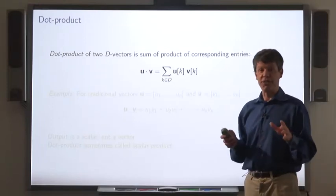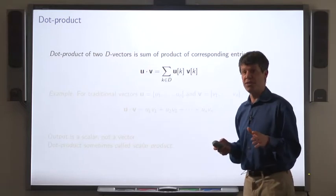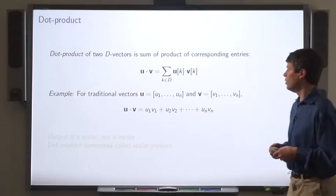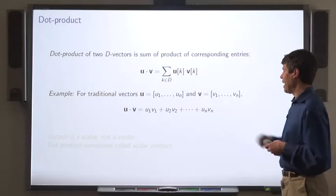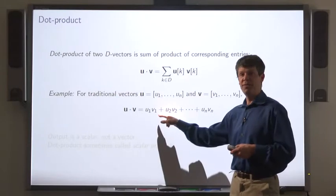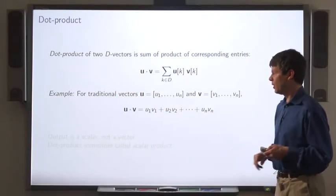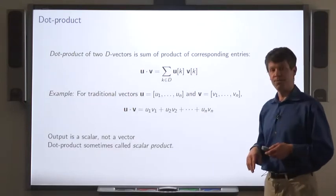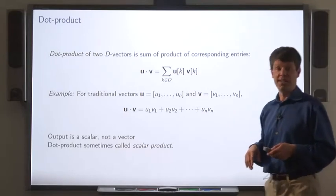Now I'll introduce another vector operation, dot product. The dot product of two vectors is the sum of the product of corresponding elements. So for example, with vectors represented as lists u1 through un and v1 through vn, the dot product is the sum of u1 times v1 plus u2 times v2 and so on. Now notice that the output of dot product is a scalar, not a vector. For this reason, dot product is sometimes called scalar product.